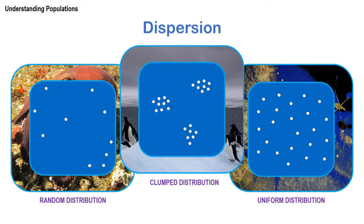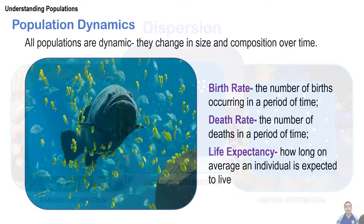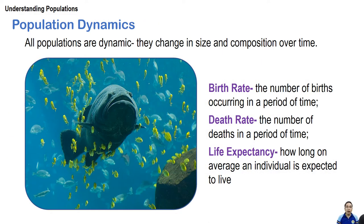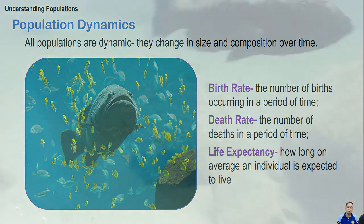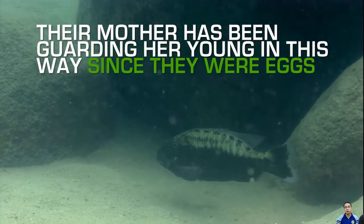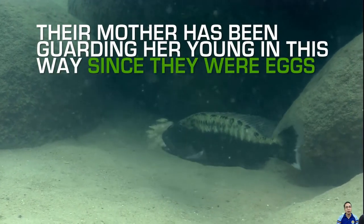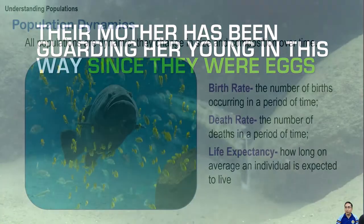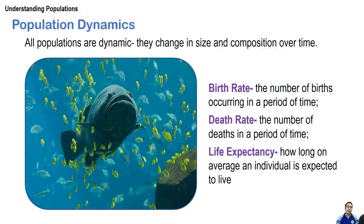Now let's take a look at population dynamics, which looks into how the population changes over time. We have birth rate — the number of births occurring in a period of time — and death rate, the number of deaths. And life expectancy: how long an average individual is expected to live.